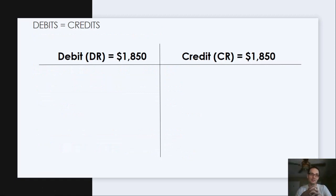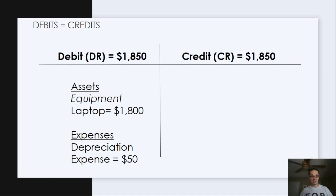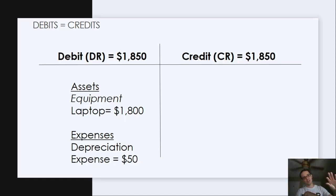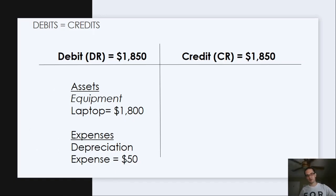Now we do our checks — do debits equal credits? Let's use our T-accounts to determine if debits equal credits, using the DEAD and CLEAR acronym. For the asset — the equipment — the A in DEAD stands for debit normal balance, so assets are increased by a debit. That's equipment, and specifically laptops. Assets is the classification, equipment is the subclassification, and laptop is the account on the general ledger subledger. For expenses, we have depreciation expense of $50. Expense is the E in DEAD — debit normal balance — so the expense is increasing by $50.